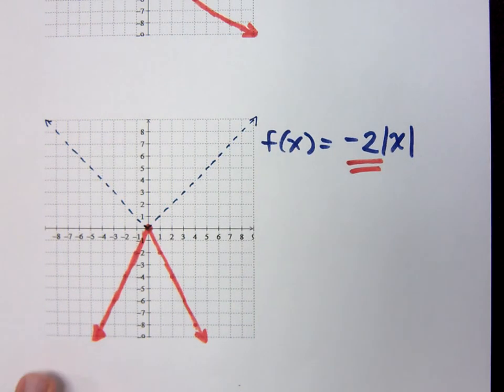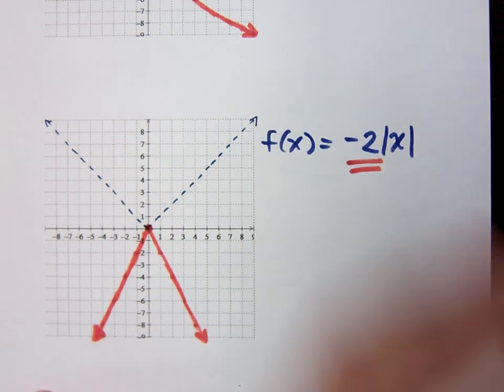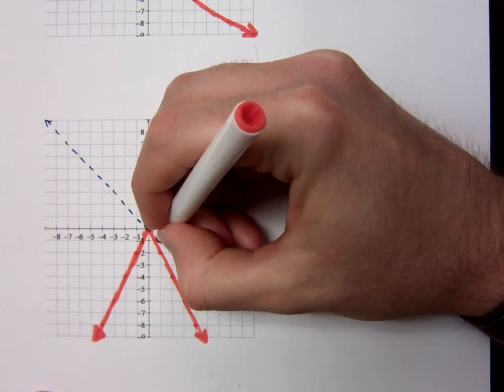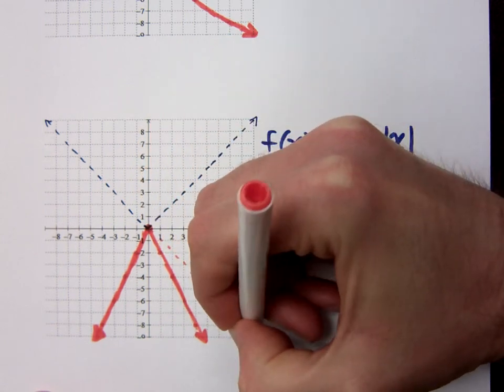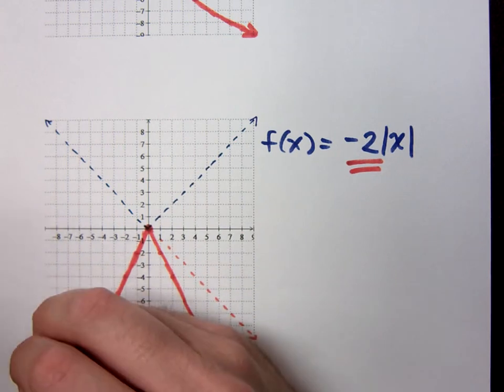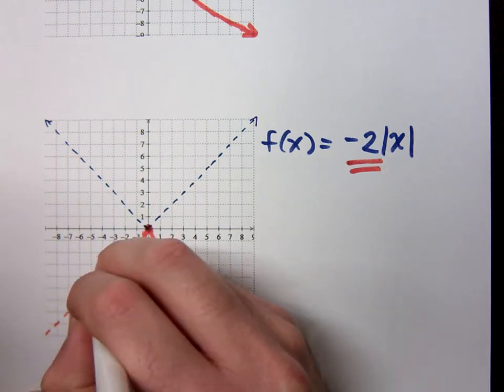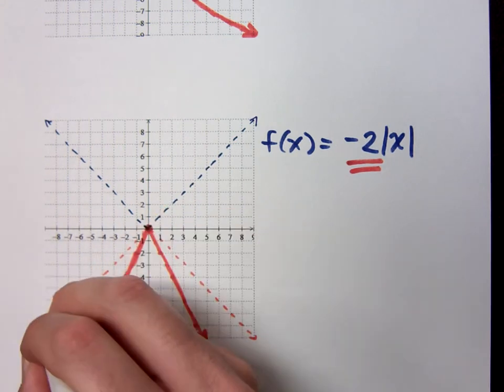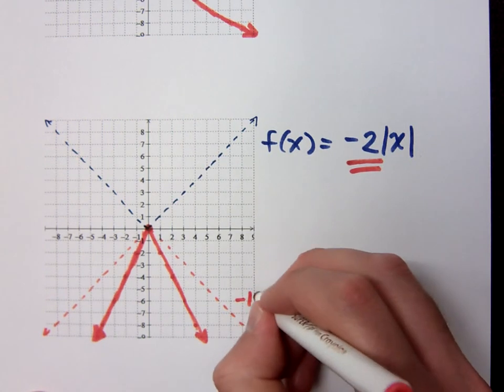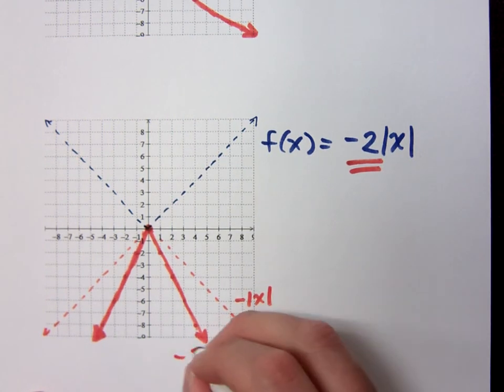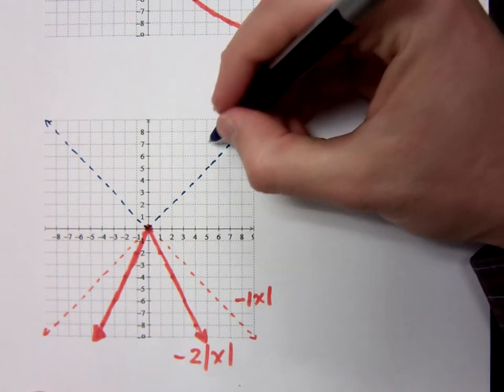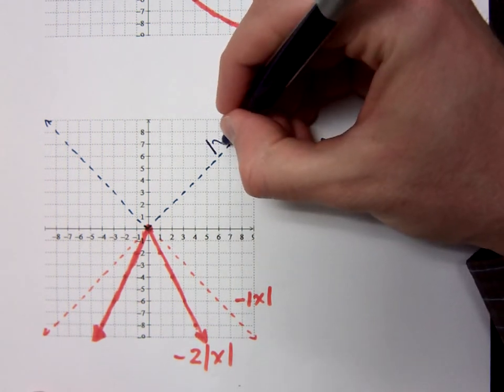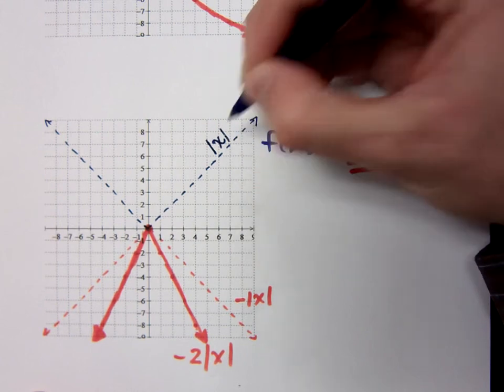Now, just so you see how it would compare to a negative absolute value of x, negative absolute value of x would be this dashed orange line right here. So this is negative the absolute value of x, this is negative 2 absolute value of x, and this guy is just your default absolute value of x. You guys see the difference there?